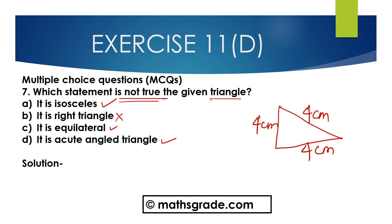It is isosceles — this is true, because two sides (4 and 4) are equal, so this can also be an isosceles triangle. But it is a right angle triangle — this is not true, because none of the angles is equal to 90 degrees. So this is not a right angle triangle. Option B is the correct option — it is a right triangle — this is not true for the given triangle.